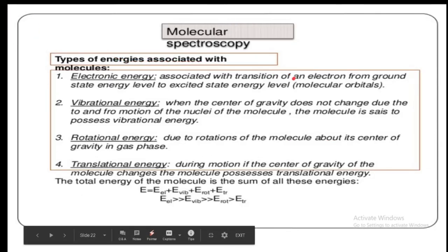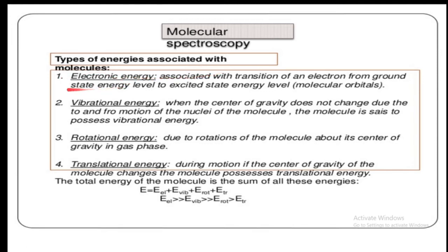Let us discuss the types of energy associated with molecules. Electronic energy is associated with the transition of an electron from the ground state energy level to an excited energy level, which corresponds to the molecular orbitals. Vibrational energy is when the center of gravity does not change due to the to-and-fro motion of the nuclei of the molecule, and there are different vibrational energy states in the molecule.